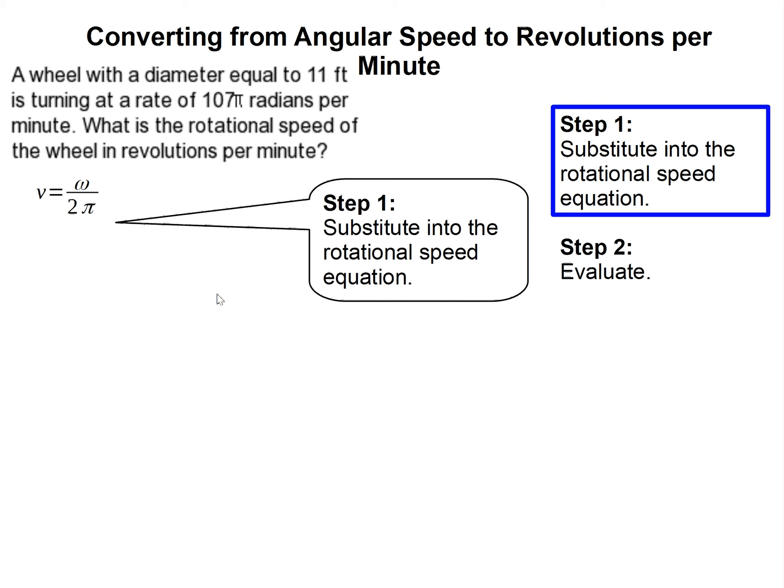And we're going to substitute in there. Notice nowhere in here is there diameter or radius, because it doesn't really matter. Remember, this is angular speed - we're just seeing how the angle changes, not the actual outside speed of the wheel. That's a different equation and video. So we're only talking about how the angle is changing. This is actually there to throw you off - you don't need it. Only need how the angle is changing. So I substituted into this equation. Now this is 107π for our omega over 2π, and this is our speed.